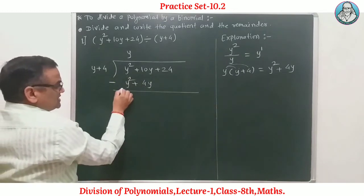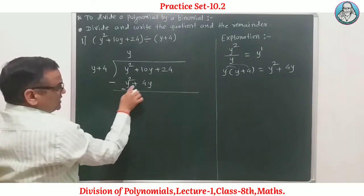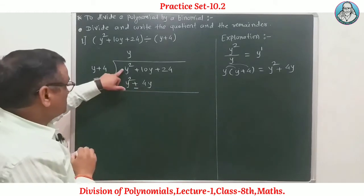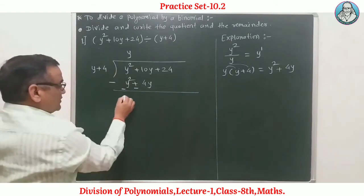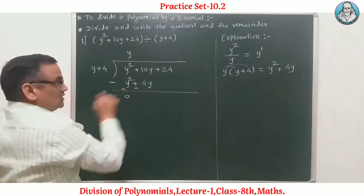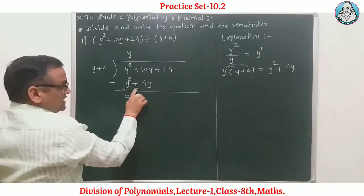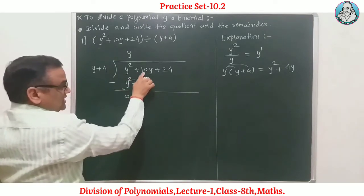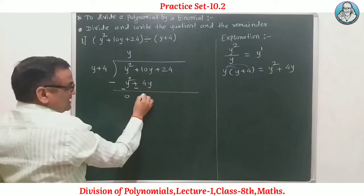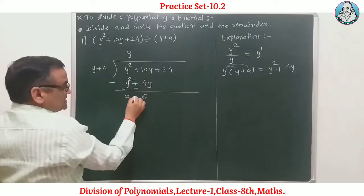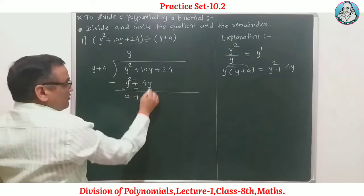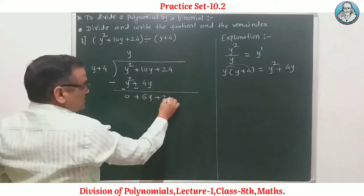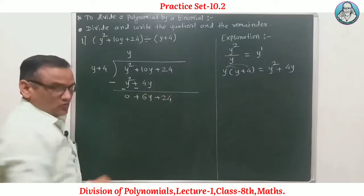During subtraction, change the signs inside: positive becomes negative. y² minus y² is 0. This is positive 10y and negative 4y — with opposite signs for subtraction: 10 minus 4 equals 6, so 6y remains. Bring down 24.